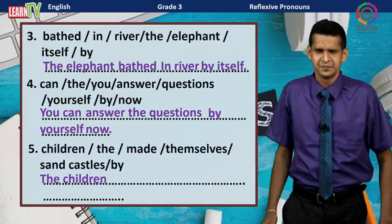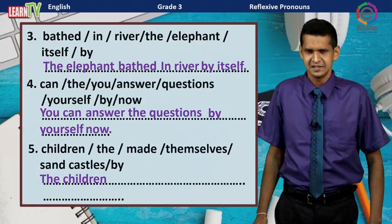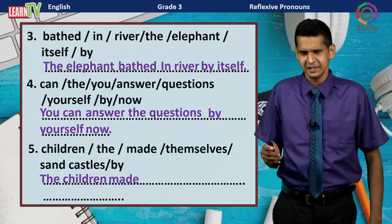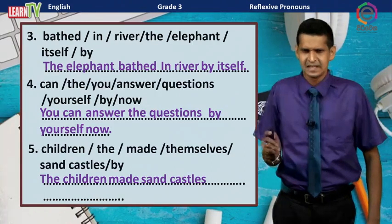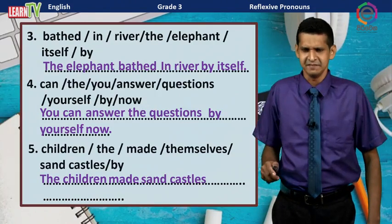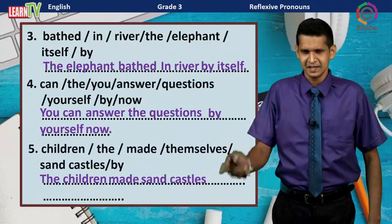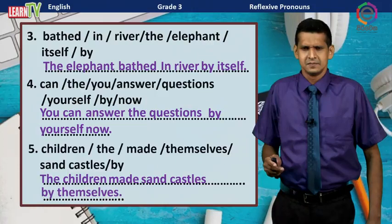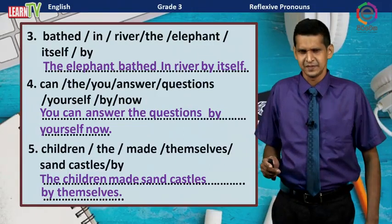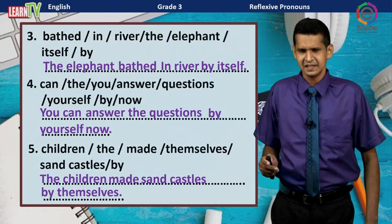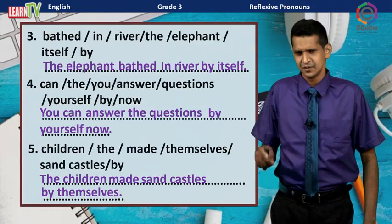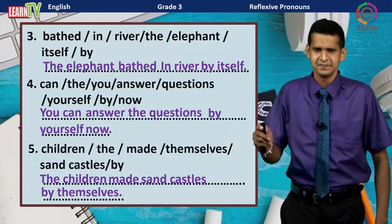Number five: The subject is 'the children,' the verb is 'made,' and the object is 'sand castles.' The sentence is: The children made sand castles by themselves. Here, instead of 'children' we use the subject pronoun 'they,' so the reflexive pronoun is 'themselves.'